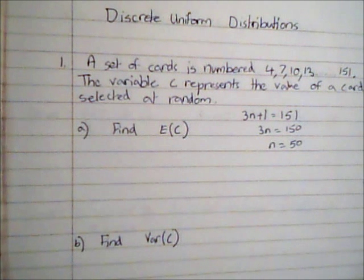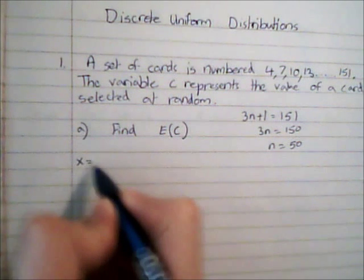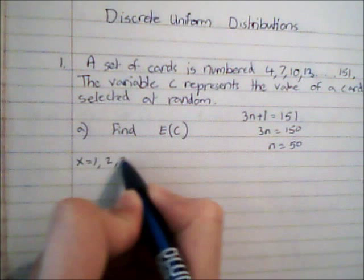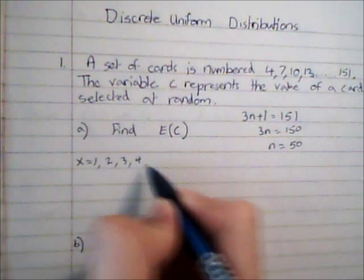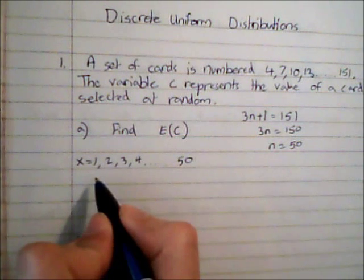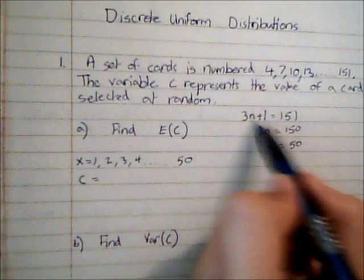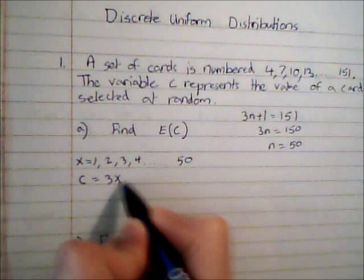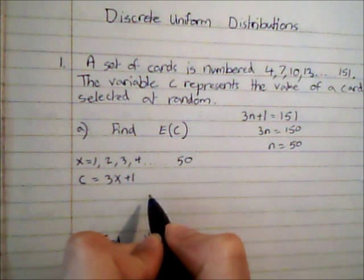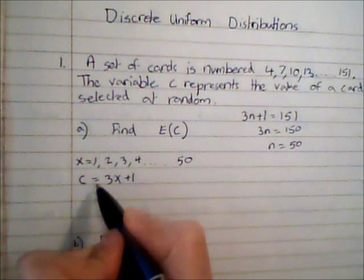So I have 50 terms in this sequence. If I let x be the sequence 1, 2, 3, 4, and so on up to the 50th term, then I can say that C is equal to 3x plus 1. So if I can find E of x, I can now find E of C.